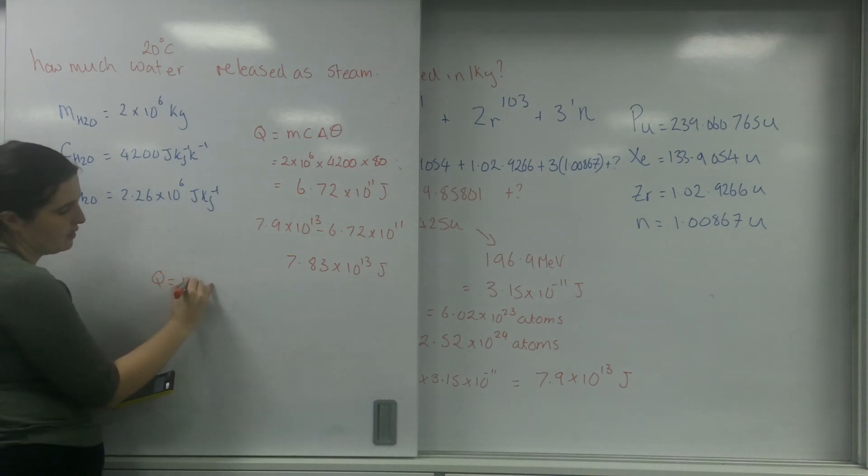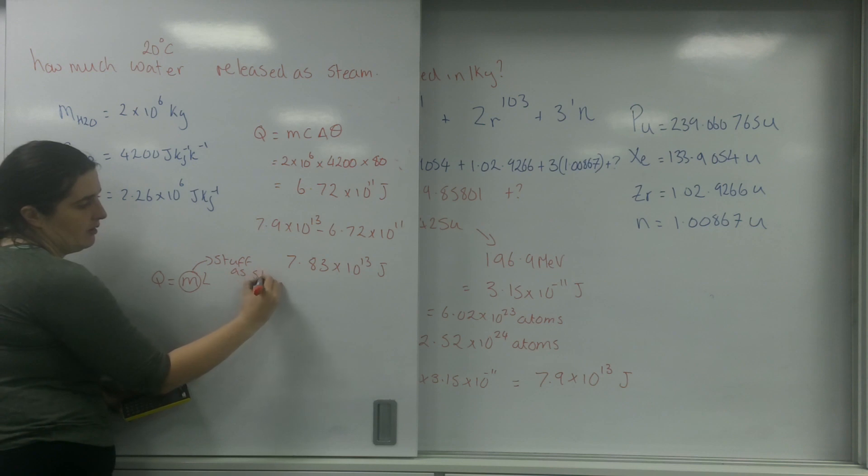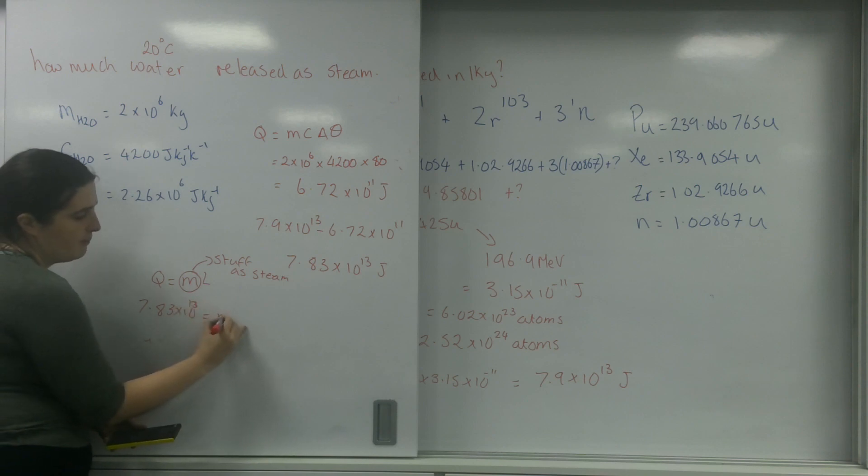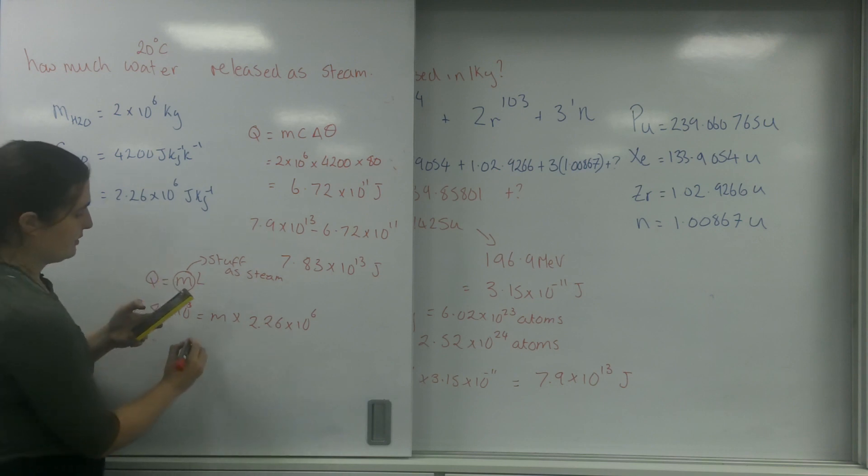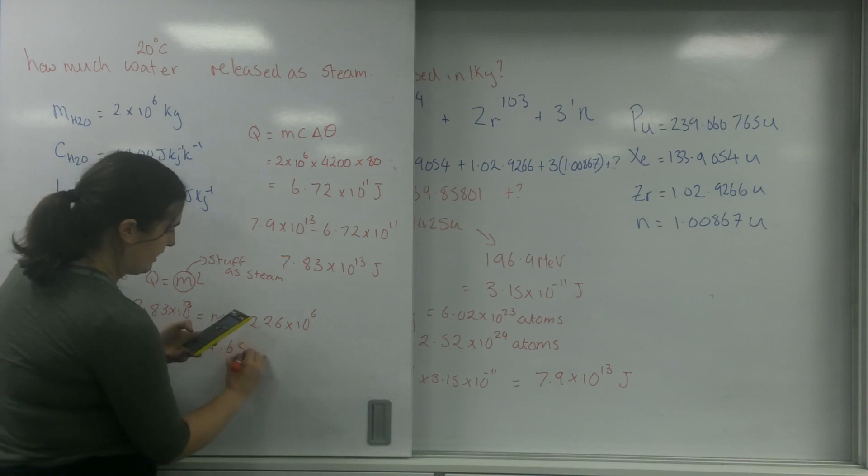I'm going to use Q equals mL because this is going to be changing into steam. So I've got 7.83 times 10 to the 13 equals m times 2.26 times 10 to the 6. This leaves me with an answer of m equals 34.66 times 10 to the 6 kilos.